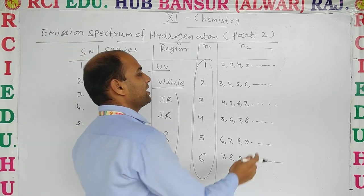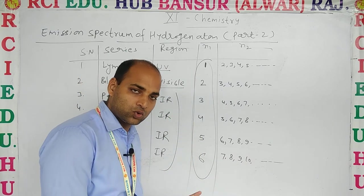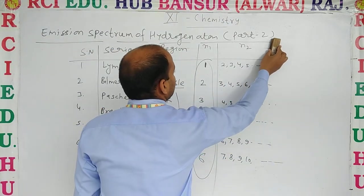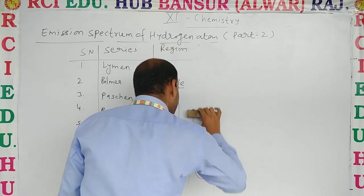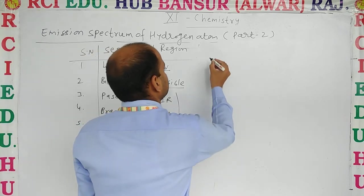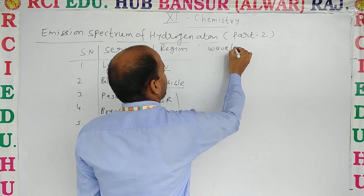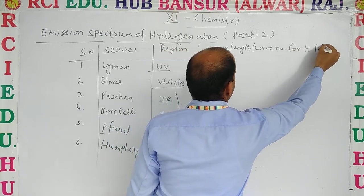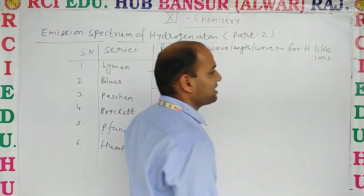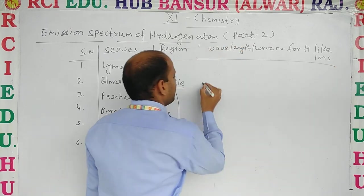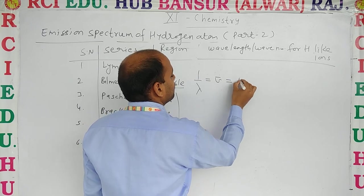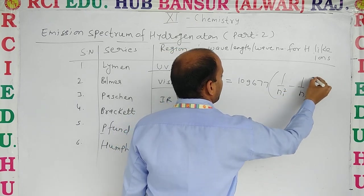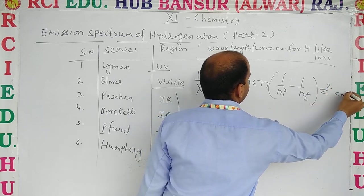Now let us discuss the formula for spectral lines of hydrogen-like ions. For H-like ions, the formula for wavelength or wave number is: 1/λ = ν̄ = 109677 × (1/n1² − 1/n2²) × Z² cm⁻¹, where Z is the nuclear charge.